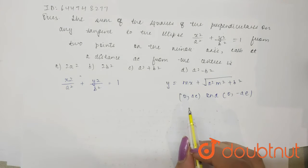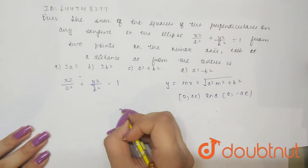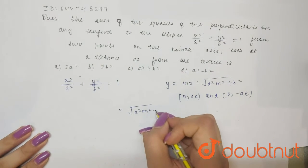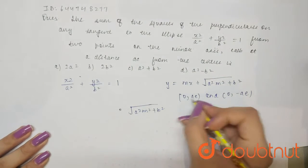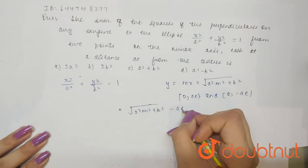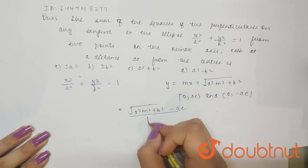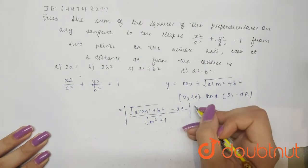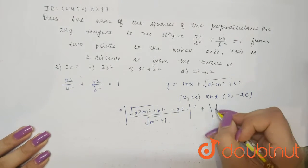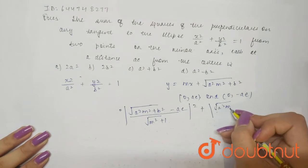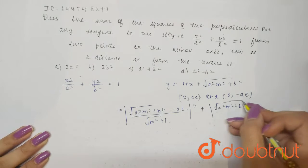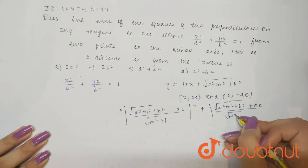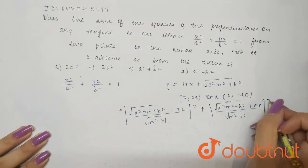Now let us calculate the sum of the squares of the perpendicular only tangent from these two points. So first of all we need to calculate the distance. So distance formula is basically this will be a square m square plus b square minus this which is minus ae divided by under root m square plus 1 and this will be whole square plus this will be a square m square plus b square plus ae divided by under root m square plus 1 and whole square.